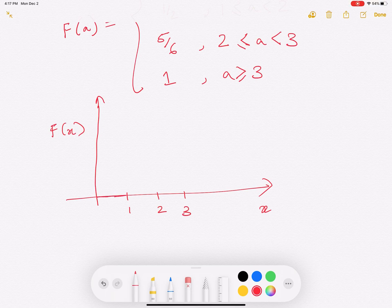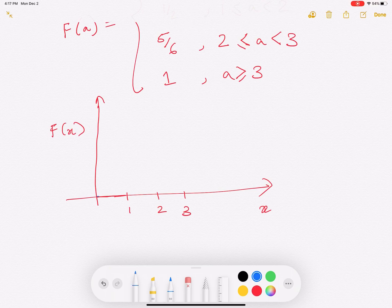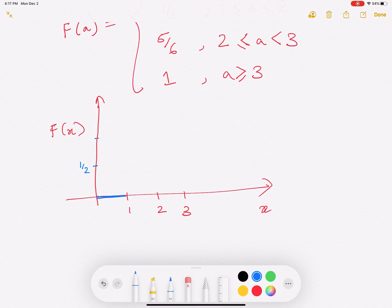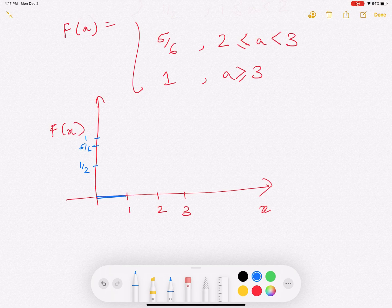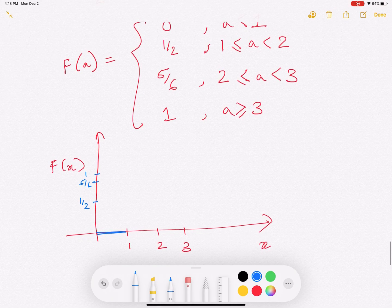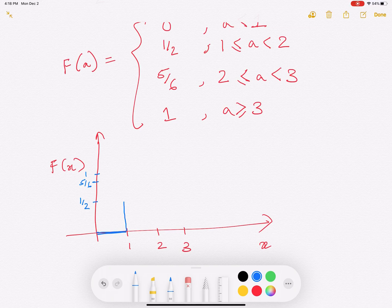Let me pick another color here. So initially, the CDF will be 0 till you reach this value of 1. And then this is 1. This is 5 over 6. So when x becomes 1, it will jump to half. And it will stay at half until x reaches this value of 2.